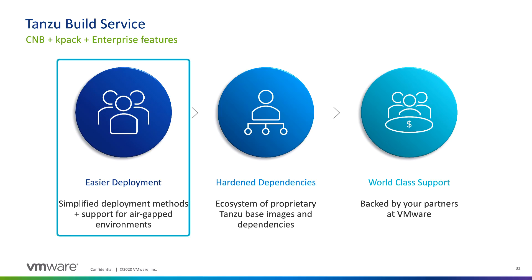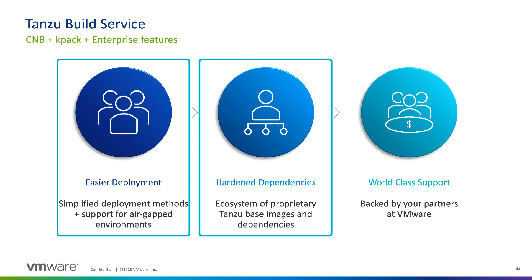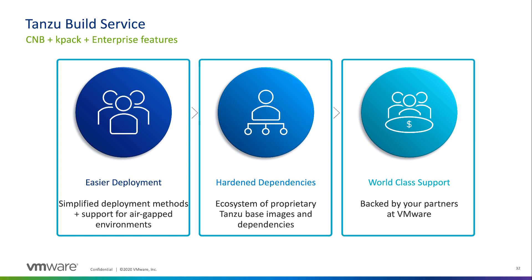Tanzu Build Service allows for easier deployment and configuration compared to KPACK, including support for air-gapped and offline environments, and injection of custom SSL certificates into build images so the resulting image and the private container registry can trust each other. It also includes access to an ecosystem of Tanzu Buildpacks and base operating systems, including offline buildpacks, proprietary buildpacks directly from VMware, support for commercial images like Red Hat UBI and Windows containers, and custom base OS golden images. All of Tanzu Build Service is backed by VMware support, including troubleshooting, break-fix support, and secure releases with all available security patches and feature enhancements.